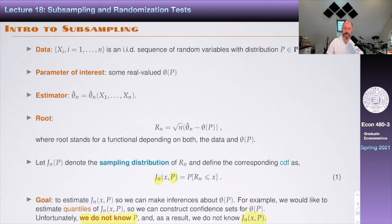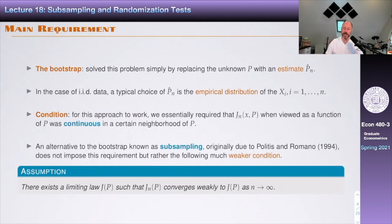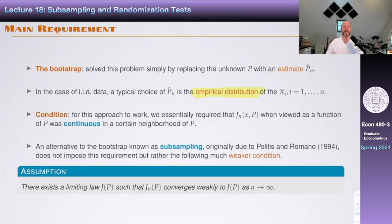The goal is to estimate this sampling distribution so we can make inference about theta. We'd like to estimate the quantiles so we can construct confidence sets for theta(P). The main problem is we do not know P, so we don't know J(x,P). The bootstrap solved this by replacing unknown P with an estimate P-hat — typically the empirical distribution that puts mass 1/n on each observation, or a parametric bootstrap in parametric models.